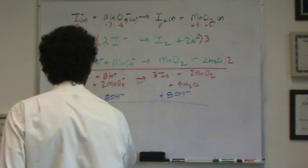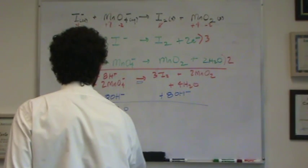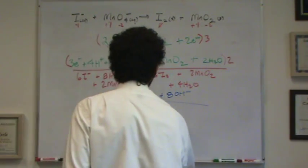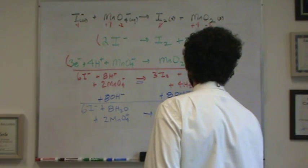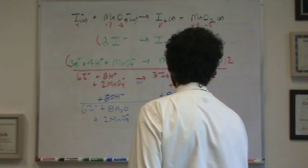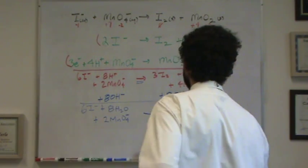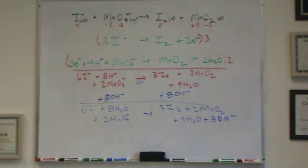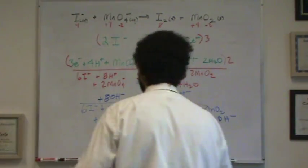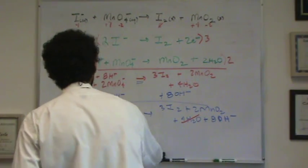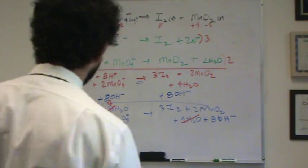Let's add this up. 6I- plus 8H2O plus 2MnO4- goes to 3I2 plus 2MnO2 plus 8OH-. I want to cancel stuff from both sides if I can. There's four waters here and eight here, so that leaves a net of four waters on the left-hand side. And it looks like that's all that will cancel, so I'll just rewrite my answer.